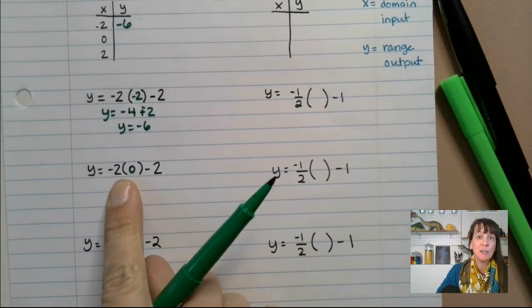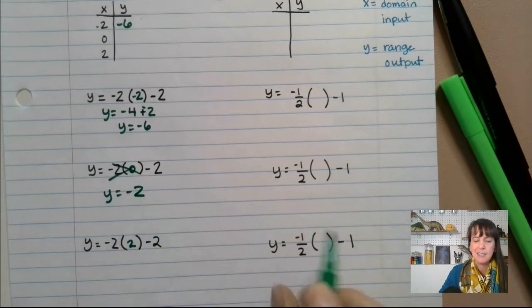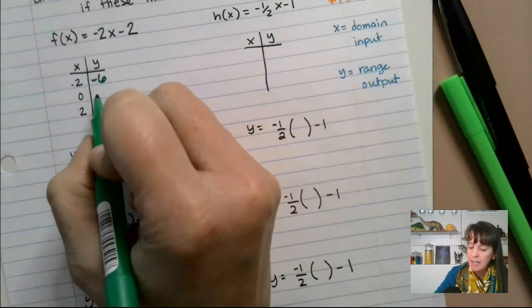Let's do zero. Now anything times zero is zero. So get rid of that. We just get y equals negative two. That's nice and easy. That's why I say pick zero. So that's negative two.